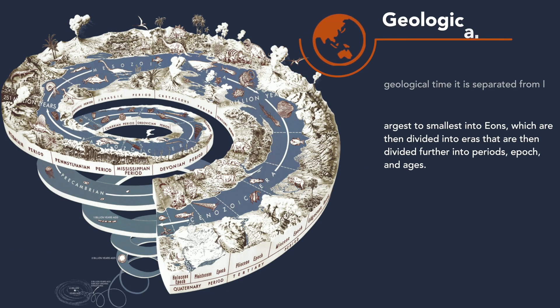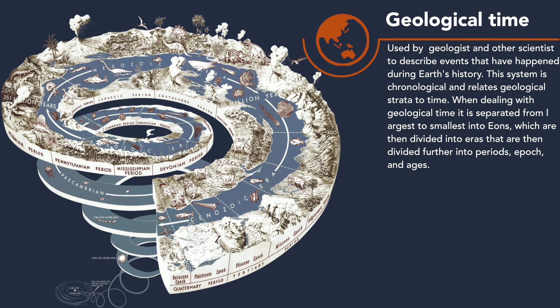When talking about geological time, this is equivalent to like a calendar event for the history of the Earth and has been separated into different sections, with the following graphic depicting Earth's history as a spiral. When dealing with geological time, it is separated from largest to smallest into eons, which are then divided into eras, that are then divided further into periods, epochs, and ages.